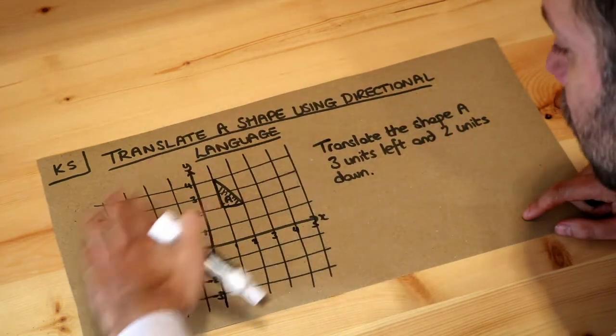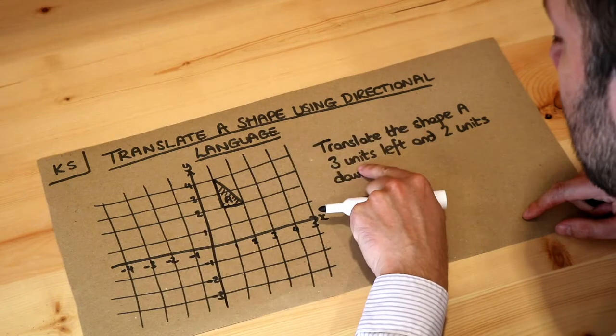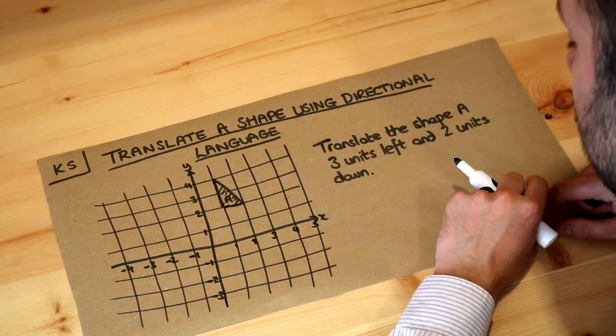So we want to translate the shape by three units left—three squares left—and two units down.